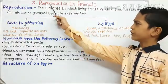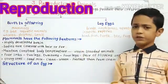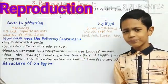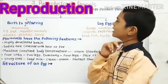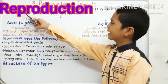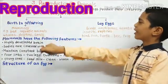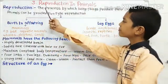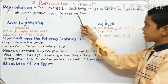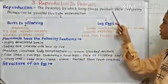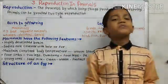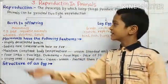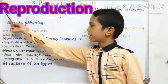Friends, can you tell me the definition of reproduction? Don't worry, I will tell you. The definition of reproduction is: the process by which living things produce their offsprings is known as reproduction.